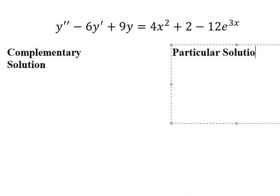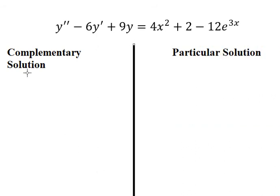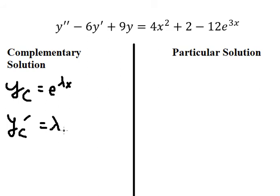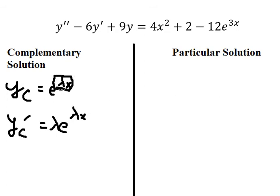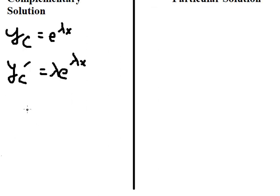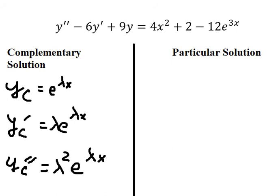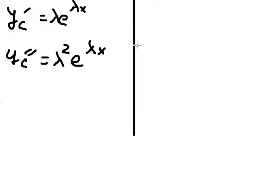I will concentrate on the complementary solution first. I put yc equals e to the power of λx. The first derivative of yc is λ·e^(λx) — we keep e^(λx) the same and differentiate λx to get λ. The second derivative of yc is λ²·e^(λx).